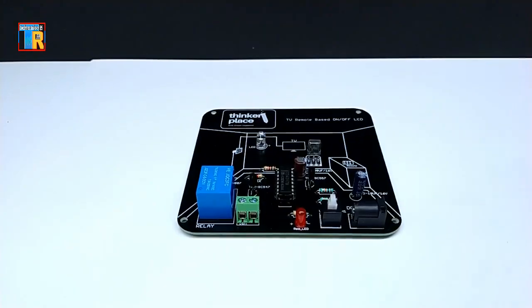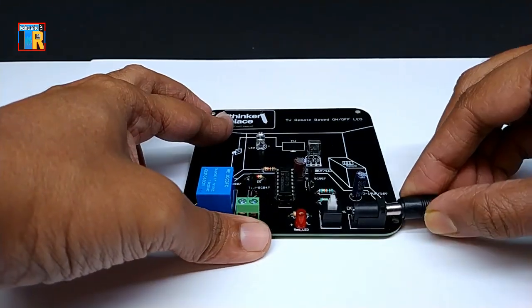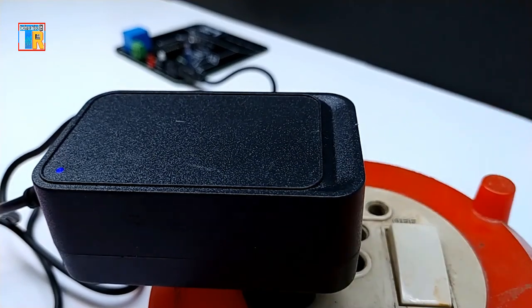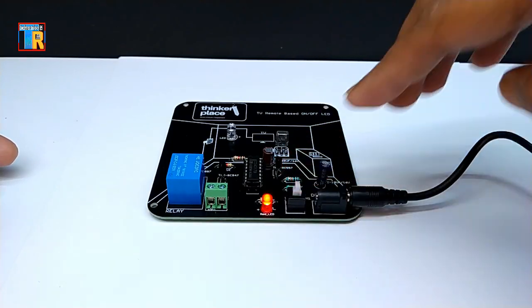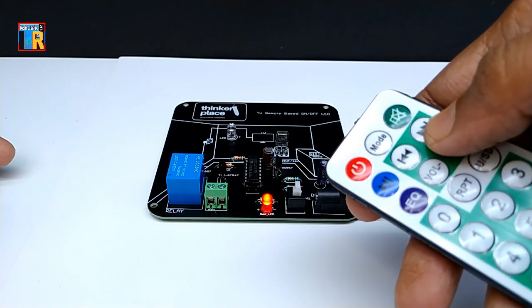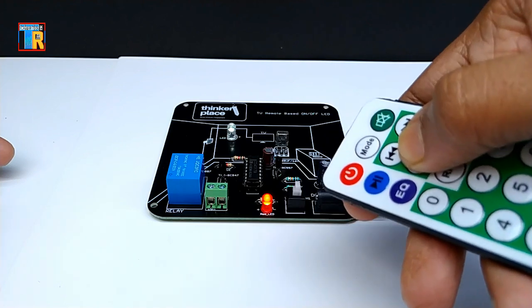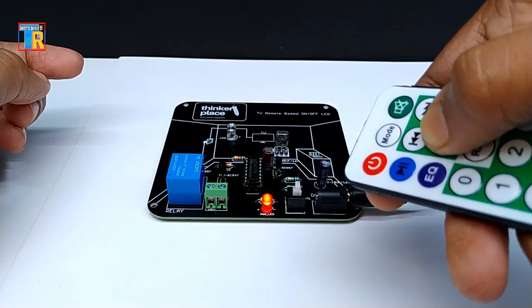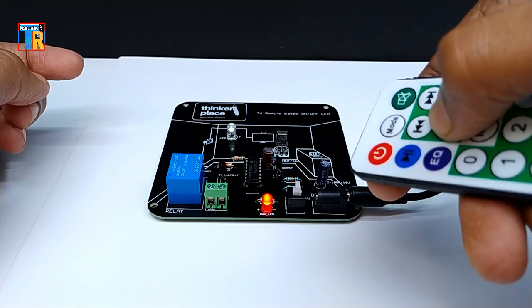Connect 5V power. Turn on the switch. You can see it is working perfectly. The white LED is indicating circuit is working and the red LED is power indicator.